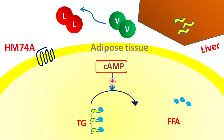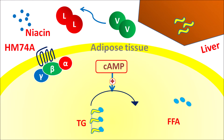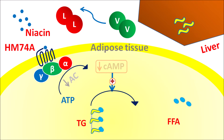Lipolysis can be controlled by the HM74A receptor present on adipose tissue — a G-protein-coupled receptor associated with alpha, beta, and gamma subunits. Niacin binds to this receptor, producing inhibition of the adenyl cyclase system. When adenyl cyclase is inhibited, ATP is less converted to cyclic AMP, resulting in decreased cyclic AMP levels. This reduces lipolysis, thereby reducing free fatty acid uptake into the liver and decreasing production of VLDL and LDL.